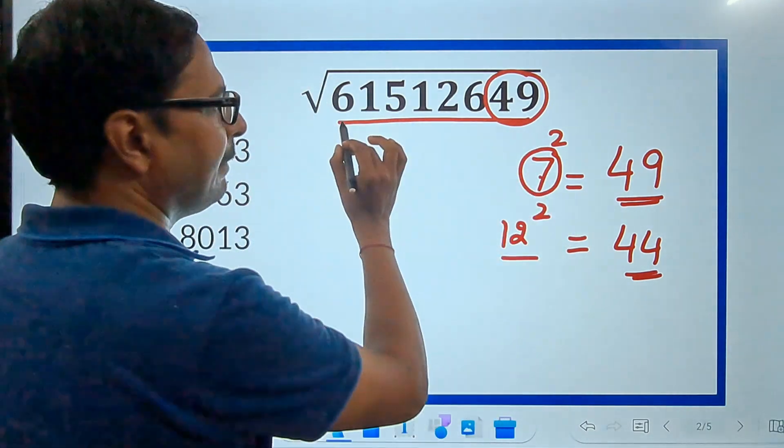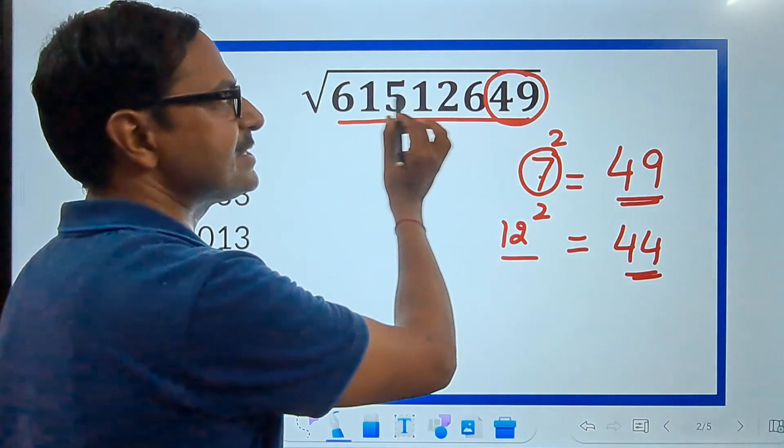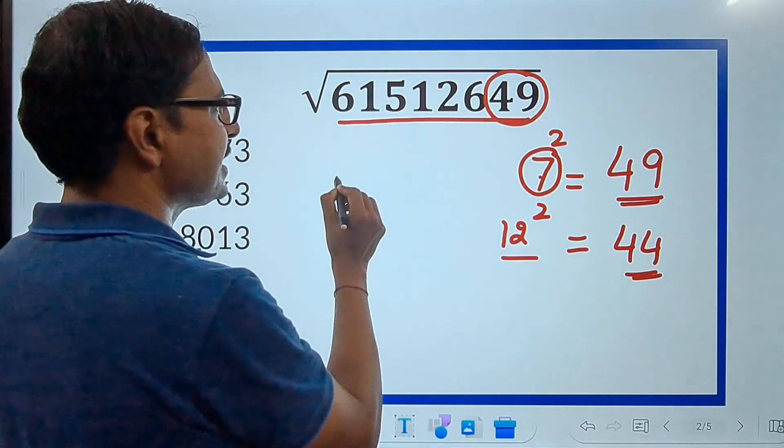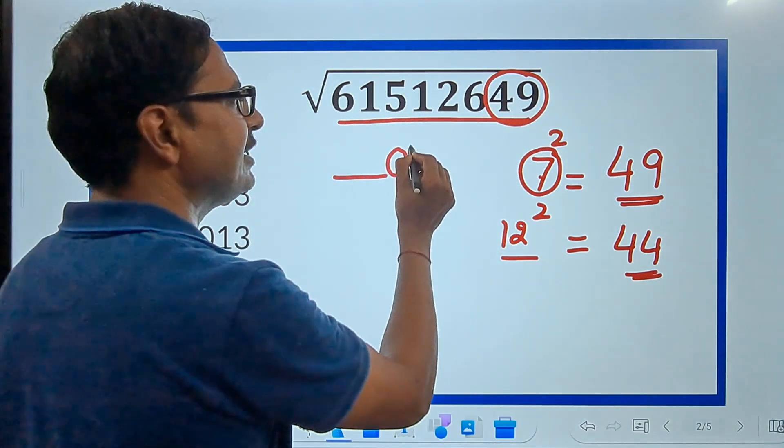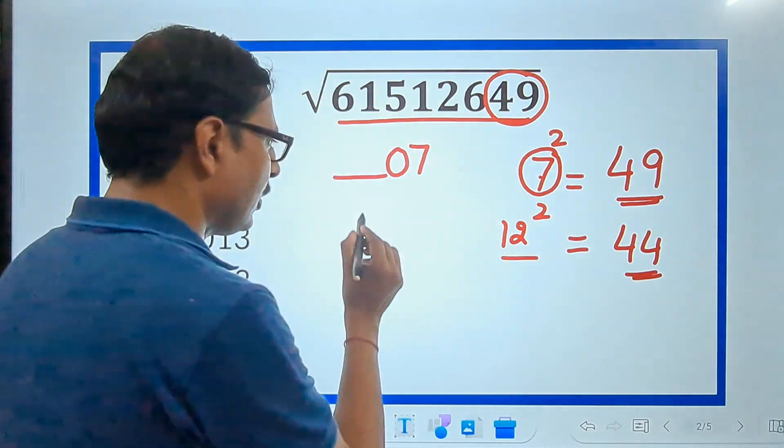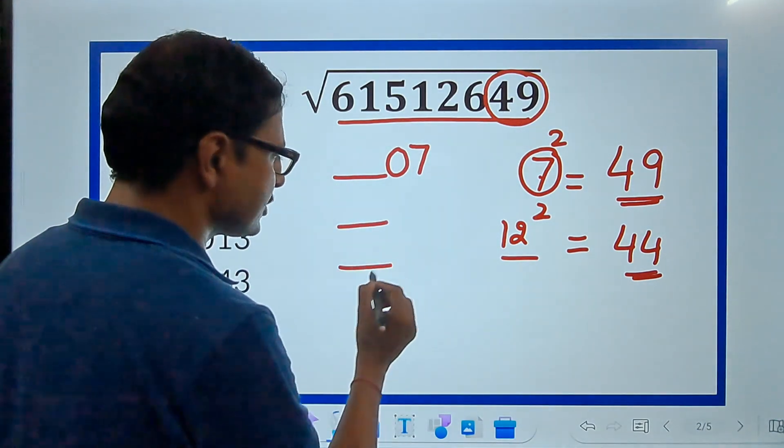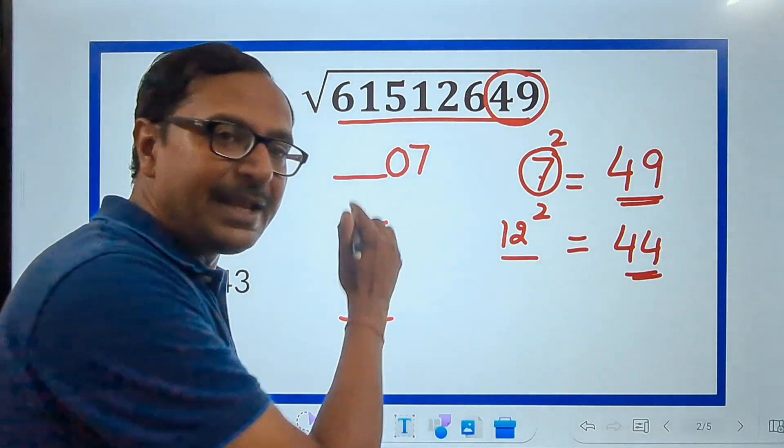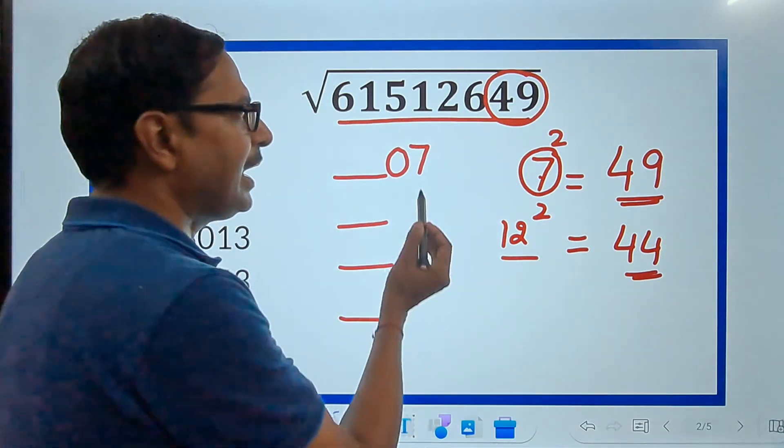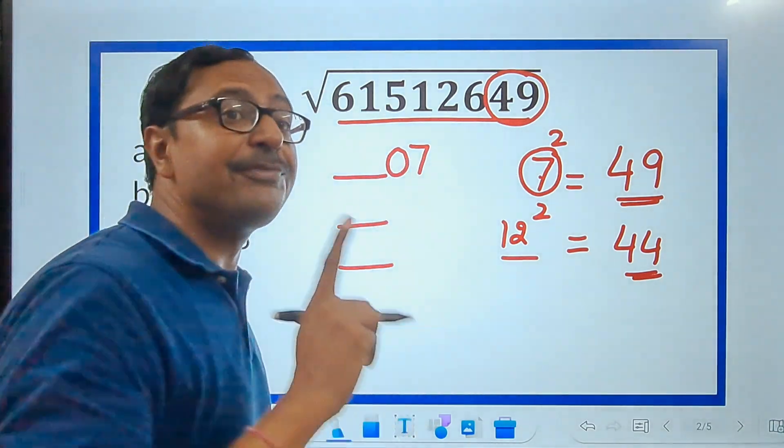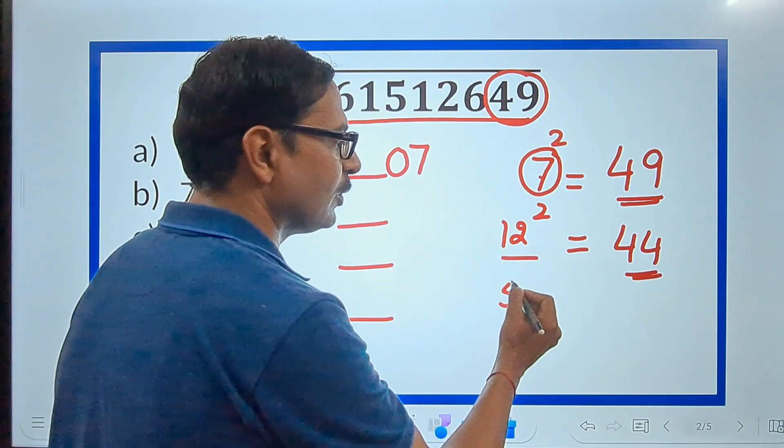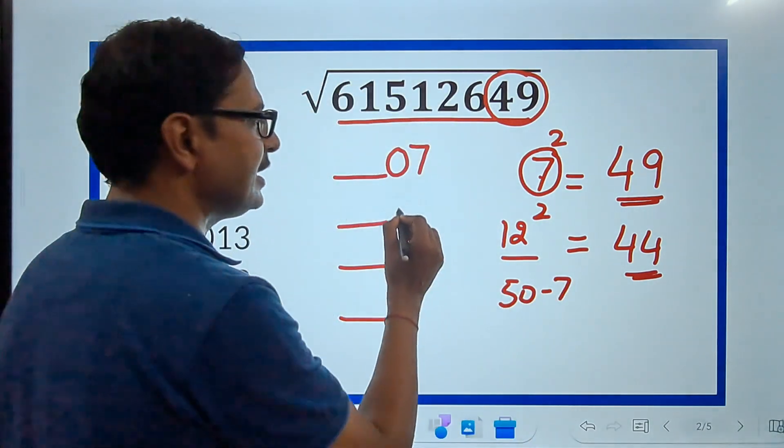So, now this 7 works for me. 7 means my answer, that means the square root of this number is either going to end in 07 or there are 3 more possibilities. For finding those 3 possibilities, I will subtract this from 50, 50.